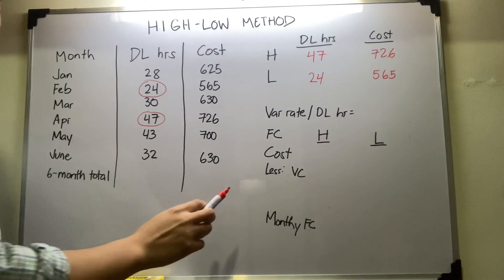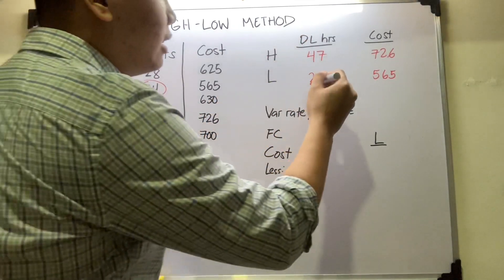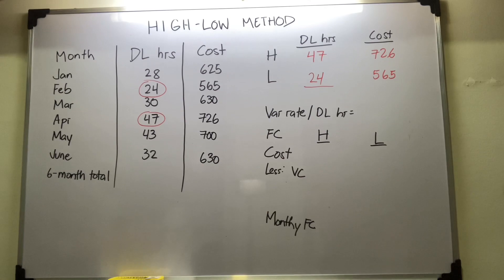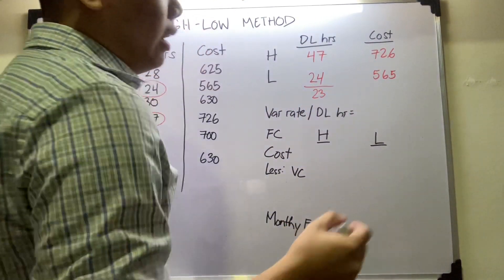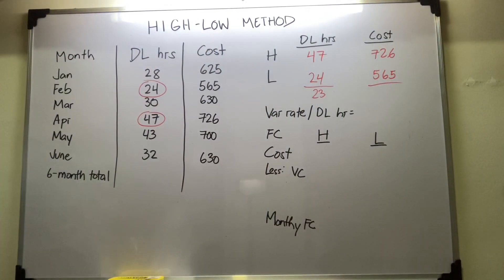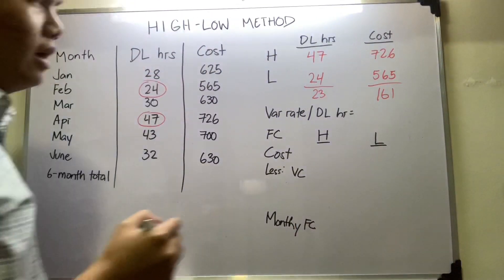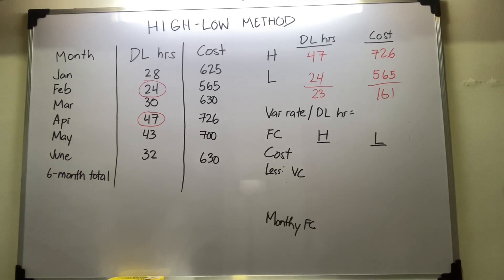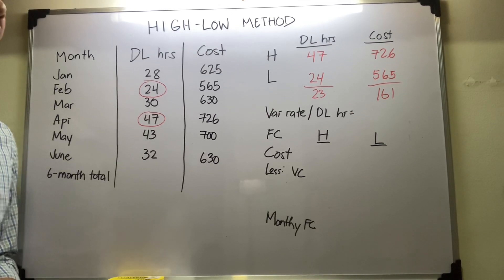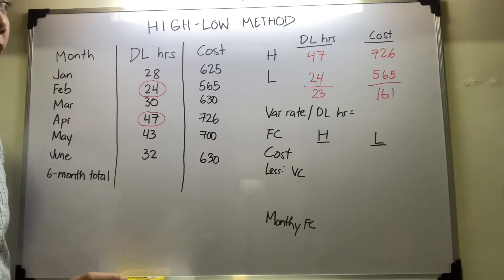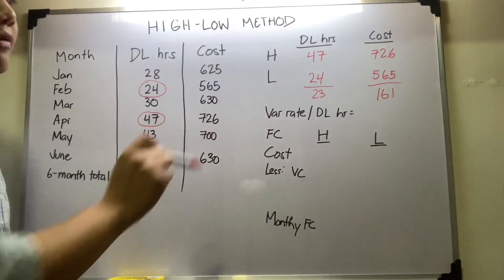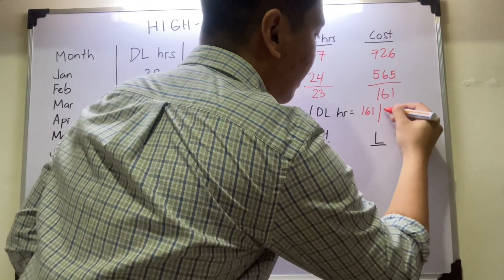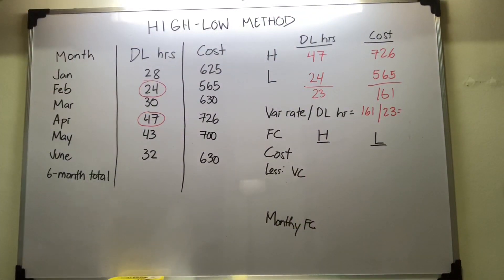From here, get the difference between the highest and lowest points. So, 47 less 24, that would be 23. Then get the difference of the highest and lowest cost: 726 less 565 gives you 161 pesos. Now you've established the differences. To get the variable rate per direct labor hour, you divide the cost difference by the activity difference: 161 divided by 23. Your variable rate per direct labor hour would be 7 pesos.